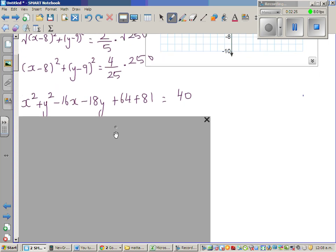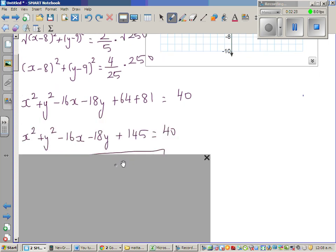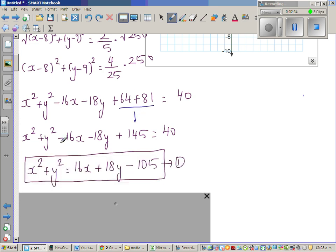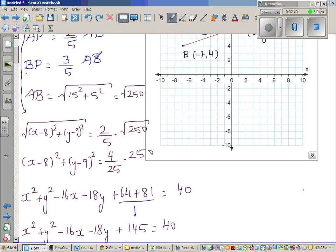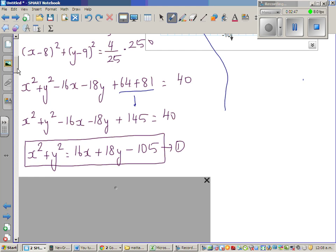So now simplifying that further, this simplifies to this, and ultimately you get x² + y² as this. Same way, when you use BP is 3/5 of AB, that's what I'm going to do the next step.